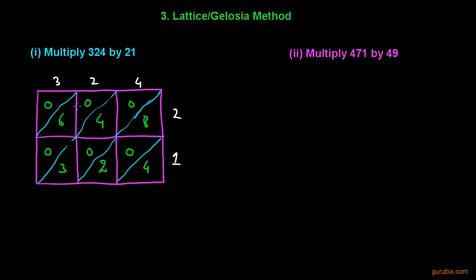We have filled all the places. Now we add diagonally. The first diagonal gives just 4. Adding 8, 0, and 2 gives 10 — we write 0 and carry 1 to the next diagonal. Adding 4 plus 3 gives 7; 7 plus 1 carried is 8. We write 8 here.